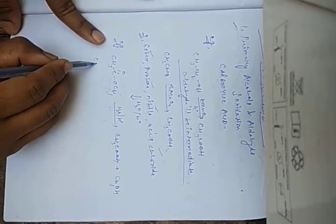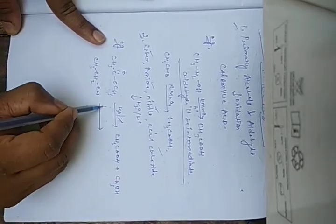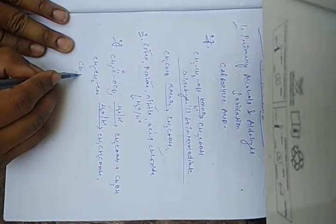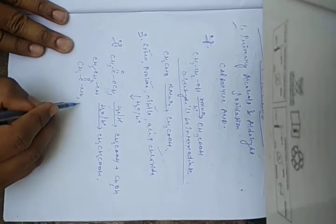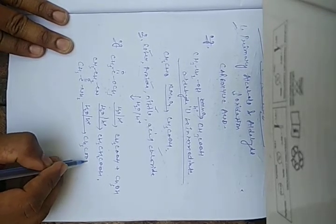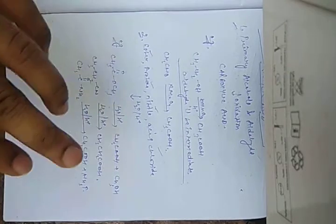Another example: let us say this is your nitrile. To convert nitrile into carboxylic acid, again you have to do hydration in acidic medium — that gives CH3CH2COOH. From amide also you have to do hydration in acidic medium, giving CH3COOH with the release of ammonia gas. So this was the method of preparation from ester, amide, nitrile, or acid chloride.